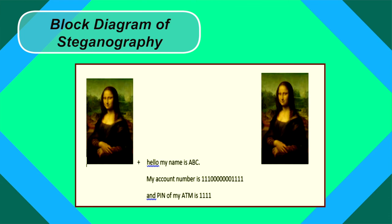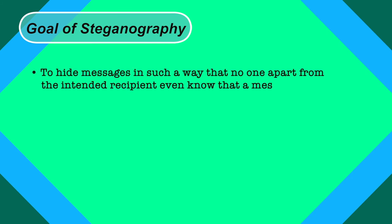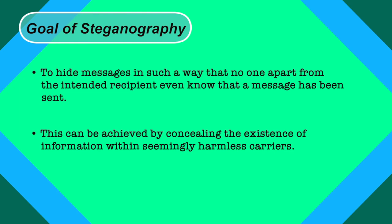In the diagram, there is a message with account details that you want to send to a friend. You can hide this information within an image — the first image is the original and the second has the message embedded in it. You can check the properties of the image: the size after embedding the message increases — for example, the image before embedding is 80 KB but after embedding becomes 92 KB. The goal of steganography is to hide messages so that no one apart from the intended recipient knows a message has been sent. The main objective is to hide information from unauthorized users without affecting the secret information.